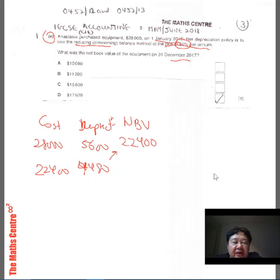And so $22,400 less $4,480, you will have netbook value at the end of the second year, which is $17,920.